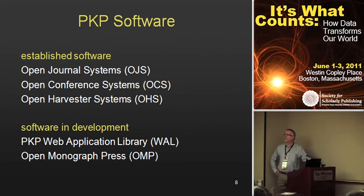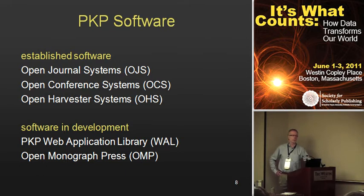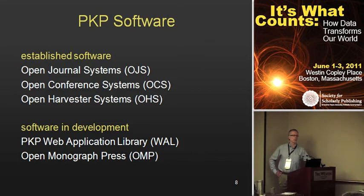Here's a quick overview of the PKP software currently available. The flagship system is Open Journal Systems, but we've also developed Open Conference Systems, which takes the peer review workflow associated with OJS and repurposes it for conference purposes. The Open Harvester System is an OAI-compliant metadata harvester that allows you to harvest tens or hundreds of journals and provide a portal or larger front end. We also have software in development called Open Monograph Press, applying the same principles to support scholarly monographs. And because we've been around long enough, we've also started rewriting the underlying code structure to keep it current and use more contemporary software tools.